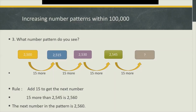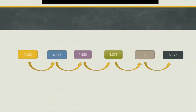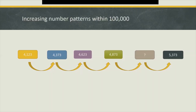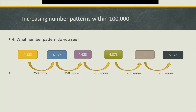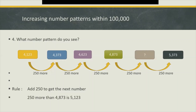Let's take a look at another example. Look at these numbers. What number pattern can you see? Two hundred and fifty more, isn't it? That's correct. So we add 250 to get the next number, and the missing number is 5,123.